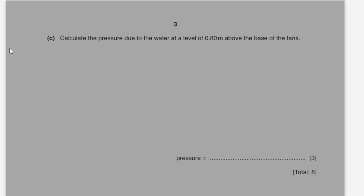Part c: calculate the pressure due to the water at a level of 0.8 meter above the base of the tank. So pressure is equal to density into gravity into height, which is equal to 1.1 into 10 to the power of 3 multiplied by 10 multiplied by 1.2. The answer is equal to 1.3 into 10 to the power of 4 pascals.